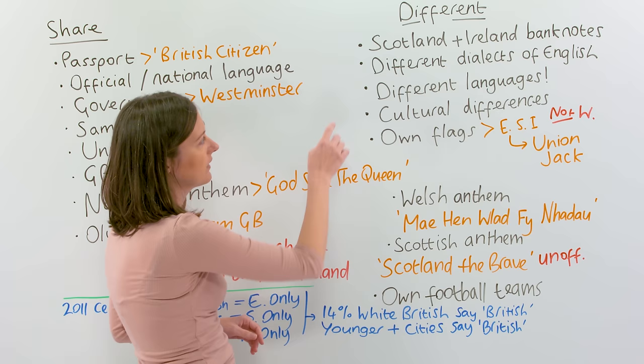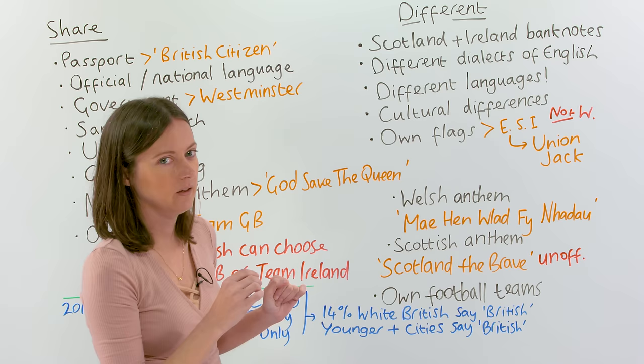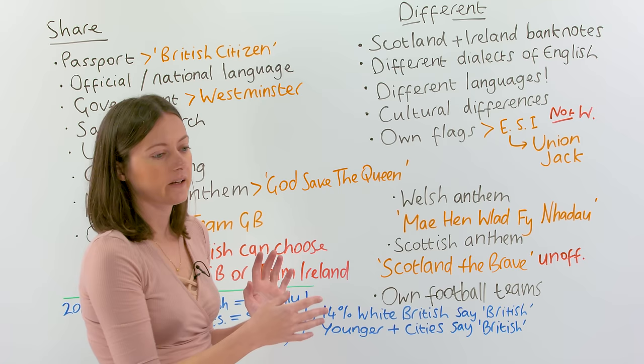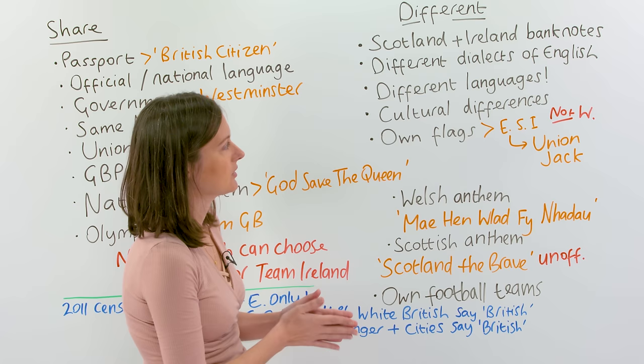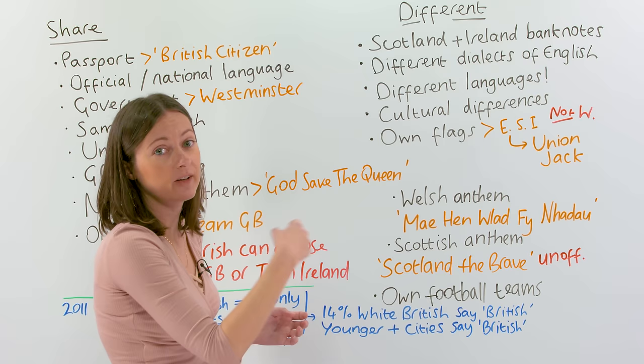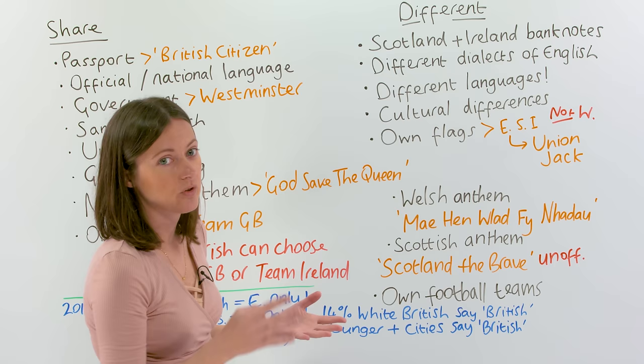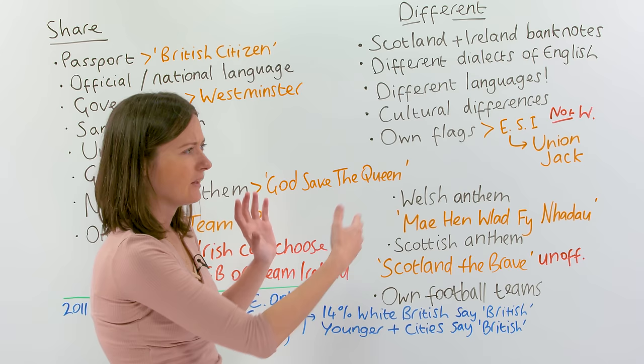What's also different is that we all speak English, but the dialects can be so different. If you're speaking to somebody up in Scotland, or someone in Northern Ireland, or Wales even, they can sound so different — it's like a different dialect of English. But in some cases, it's also a different language. If you go to Wales, many people speak Welsh, and their road signs are in two languages at the same time. They have two official languages: Welsh and English.